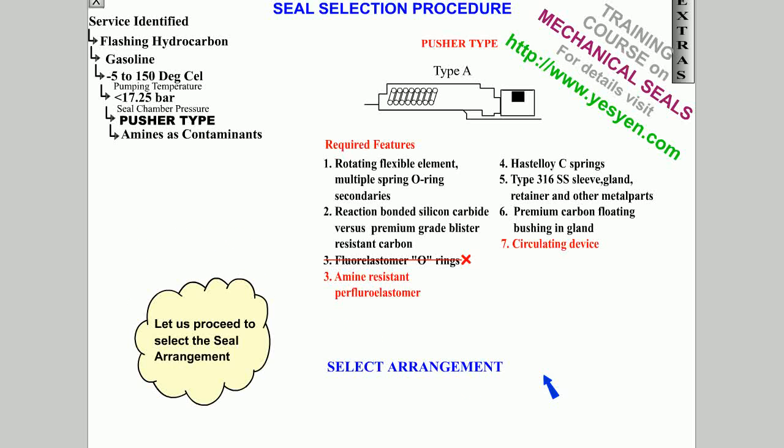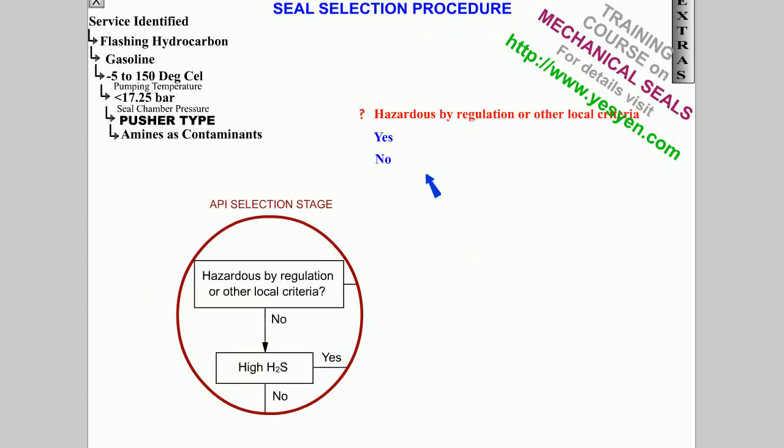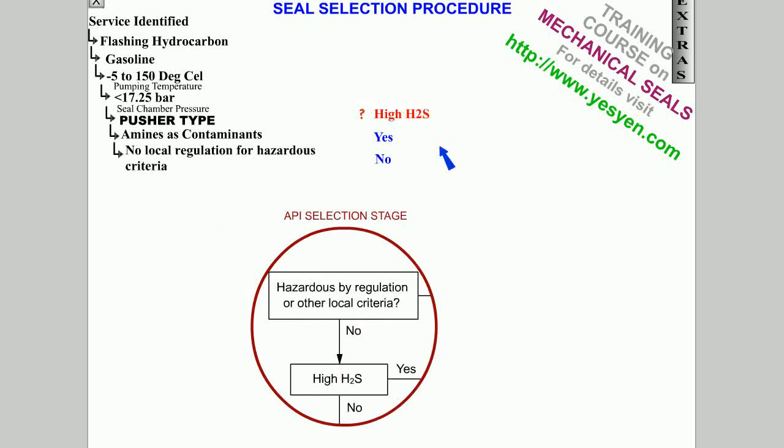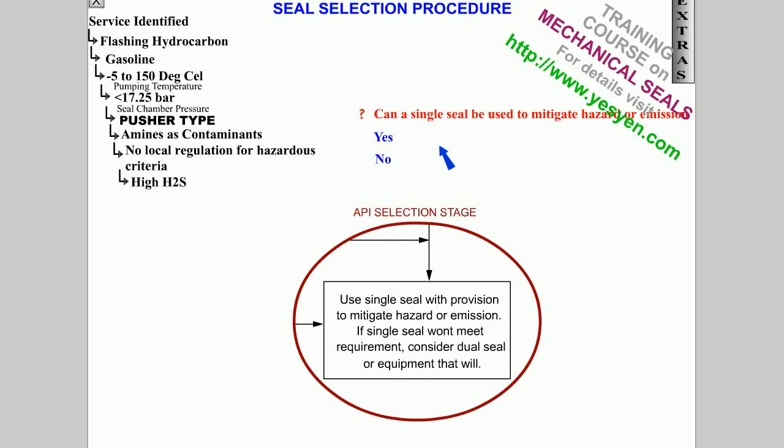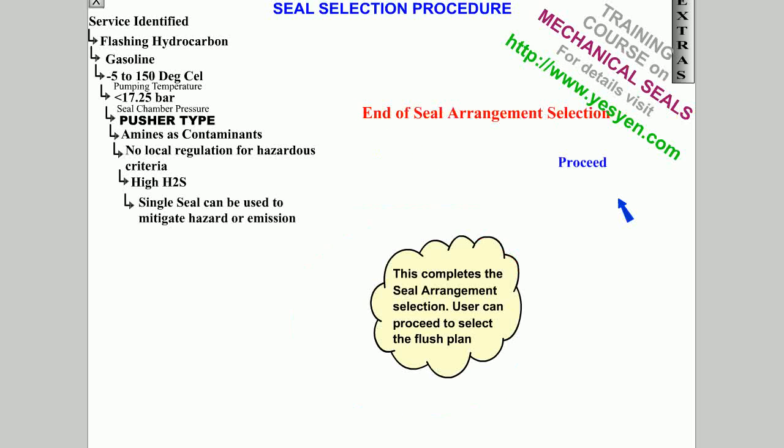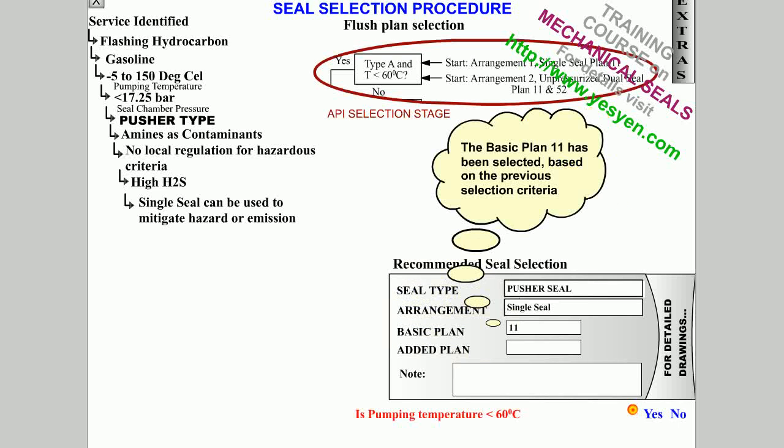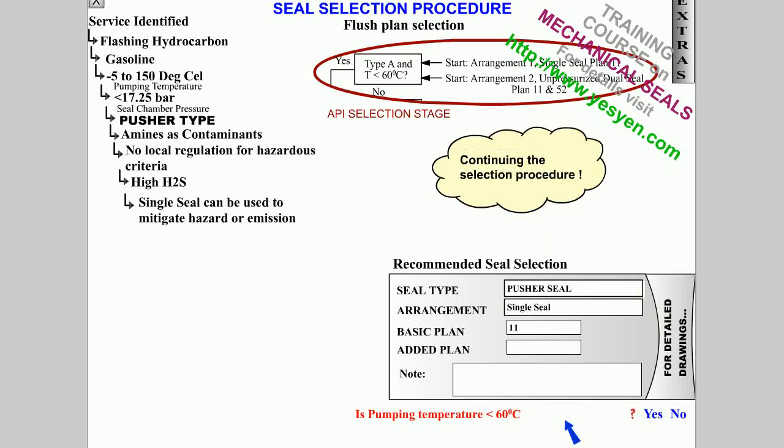Let us select the seal arrangement. This completes the seal arrangement selection. The user can proceed to select the flush plan. The basic plan 11 has been selected based on the previous selection criteria. Detailed drawings of the current stage of selection can be availed at any time. Continuing the selection procedure.